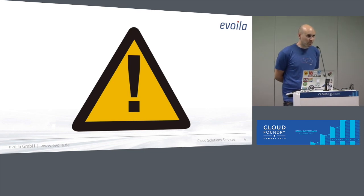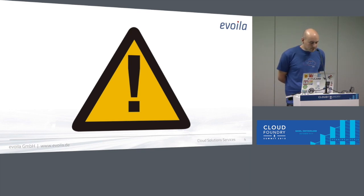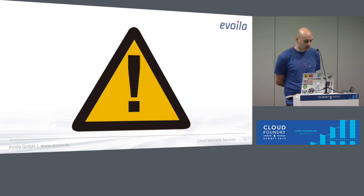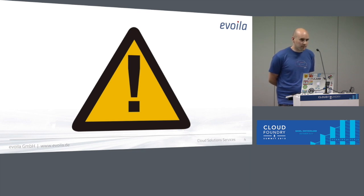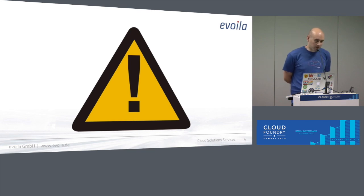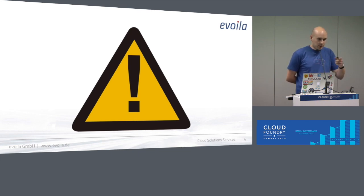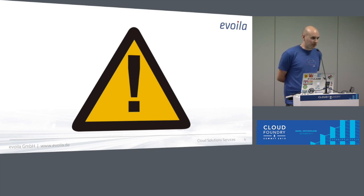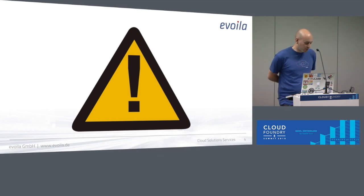Some quick disclaimers. This talk comes from a project we did at the beginning of the year. Back then, the transition repo was not as good as it is now, so we came up with our own way to upgrade from CF release to CF deployment. The second disclaimer is every deployment is a bit different, so you might need to adapt some of the points. CF release is deprecated since February, so slowly you should come to a point where you upgrade.